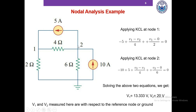Applying KCL at node 2: 5A is leaving, so we write plus 5; 10A is entering node 2, meaning minus 10 is leaving, so we write minus 10. The outgoing current in the branch to ground is V2 minus 0 divided by 6. The outgoing current in the branch toward node 1 is V2 minus V1 divided by 4. We have four branches at node 2 and four corresponding terms. Solving these two equations gives us the node voltages V1 and V2, measured with respect to the reference node.